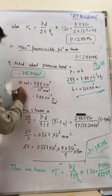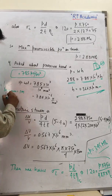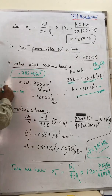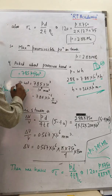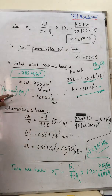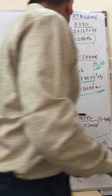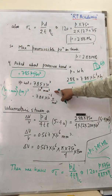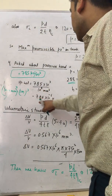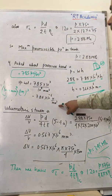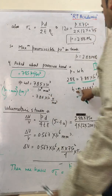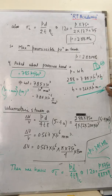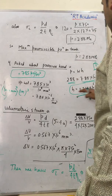Since 1000 mm equals 1 meter, cubing both sides gives 10⁹ mm³ per m³. So the specific weight in terms of N/mm³ is 7.85 × 10⁻⁶ N/mm³. From here we can get the pressure expressed in terms of the head of that liquid.